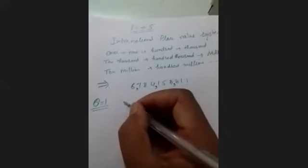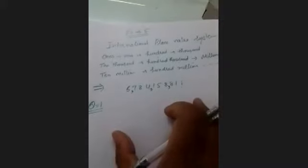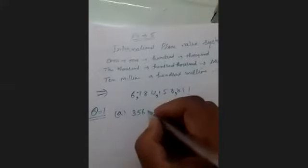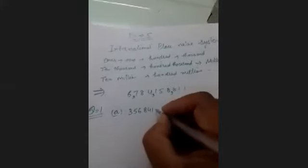Now we will discuss a few questions of exercise five. Exercise five, first question: Rewrite the following numbers with proper commas using the international place value system. Part A, our first number is 356,841,29. Now we will rewrite this number: 3,5,6,8,4,1,2,9.